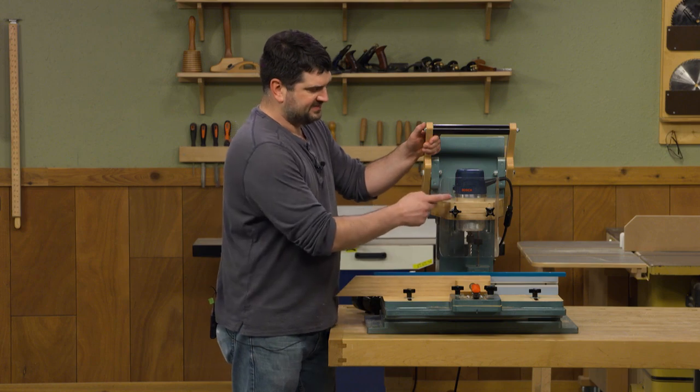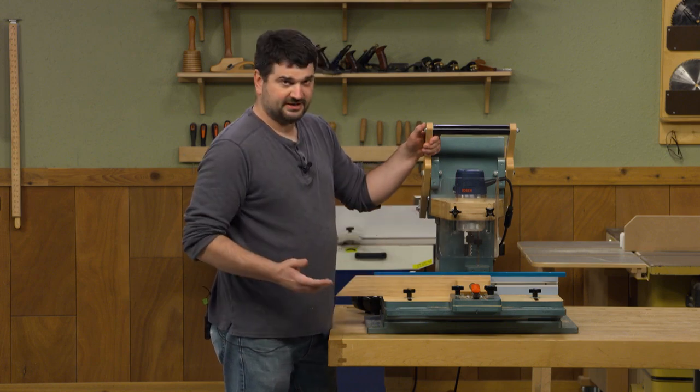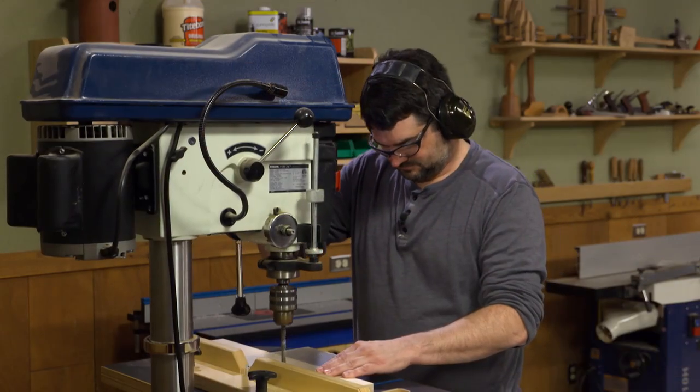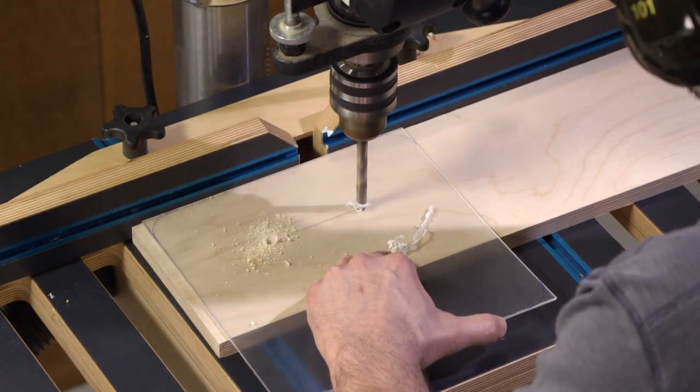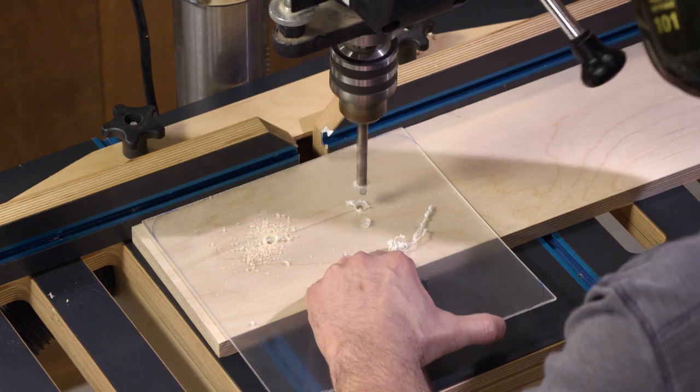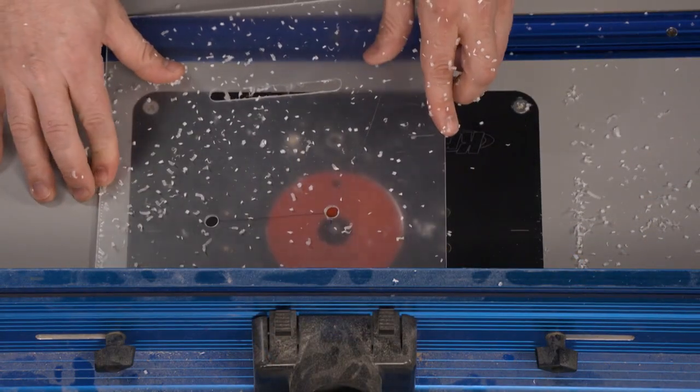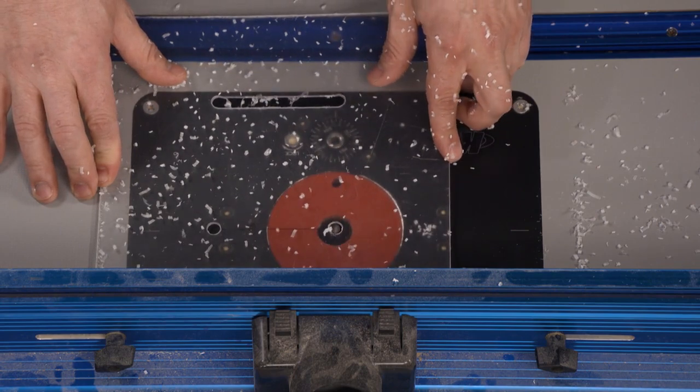I started with an eighth-inch sheet of acrylic. I went over to the drill press and drilled holes at the start and stop of each slot, and then I took it over to the router table with a three-eighths inch router bit. I could clear out the rest of the waste on each slot.